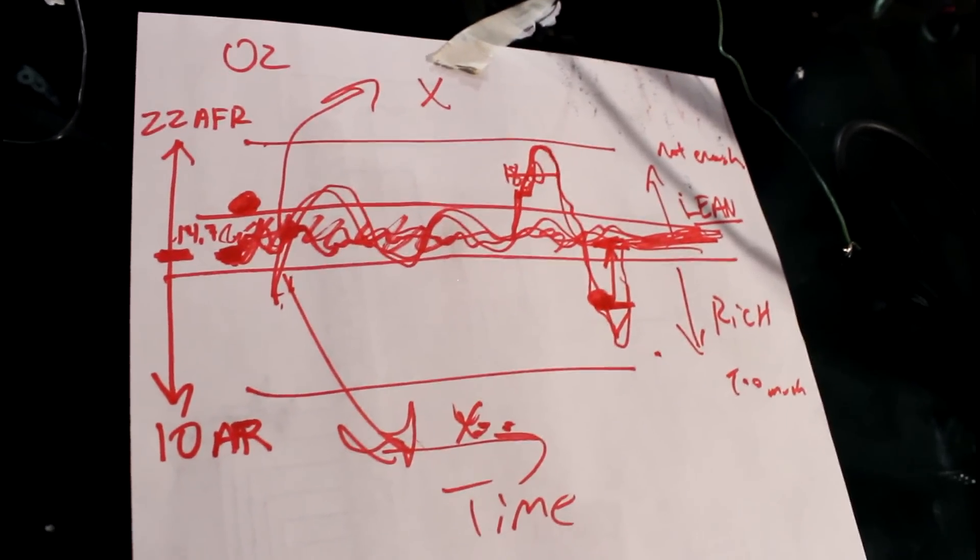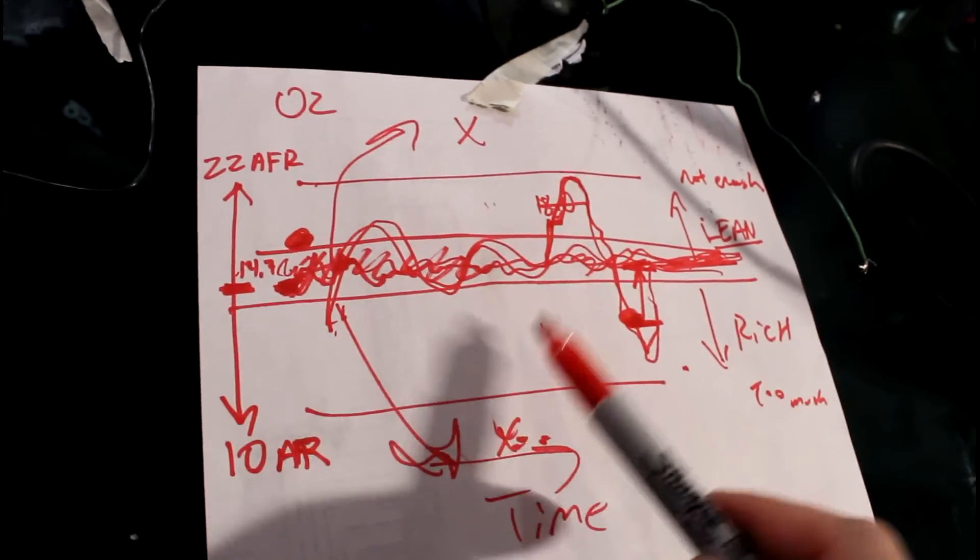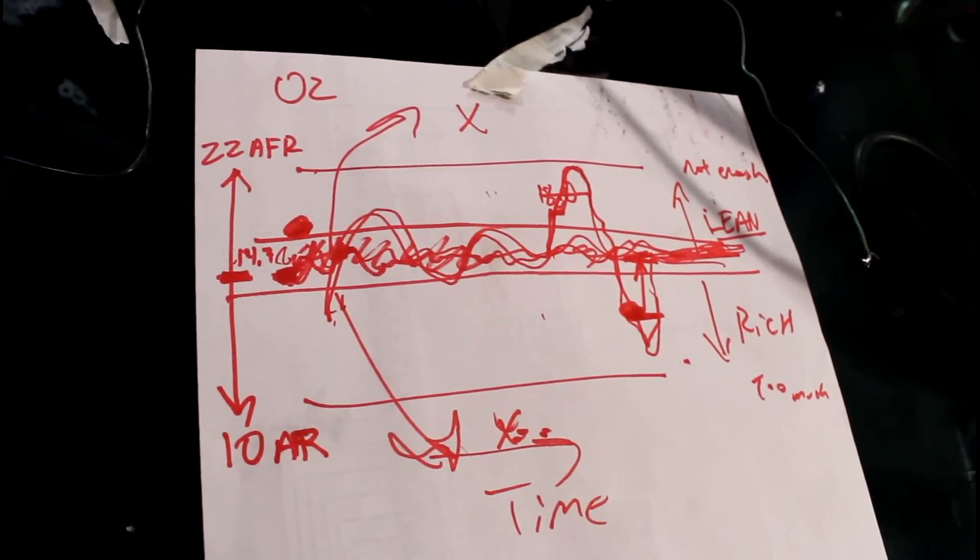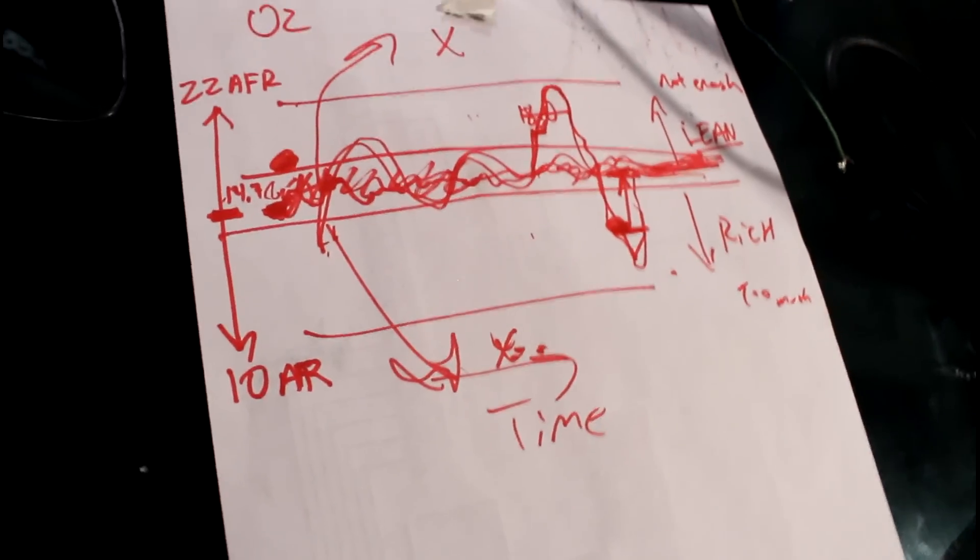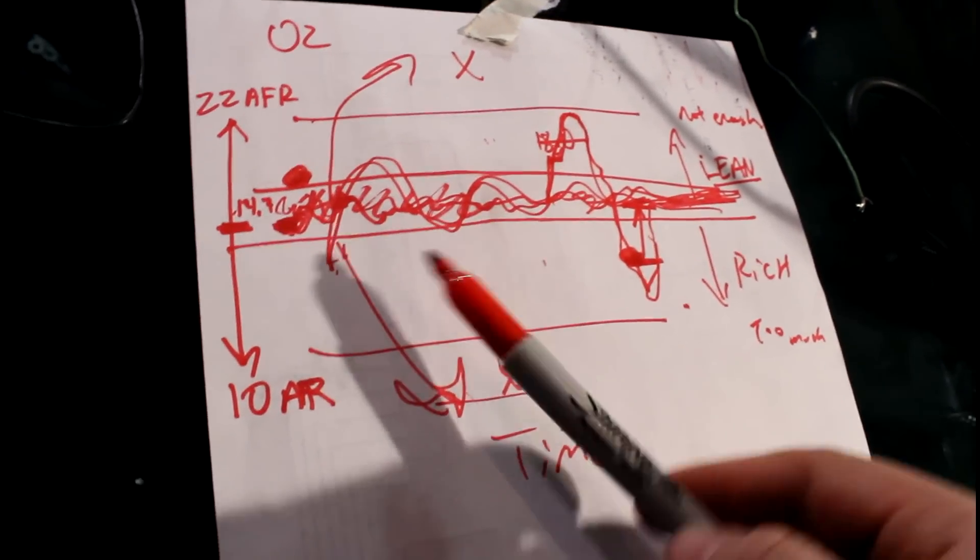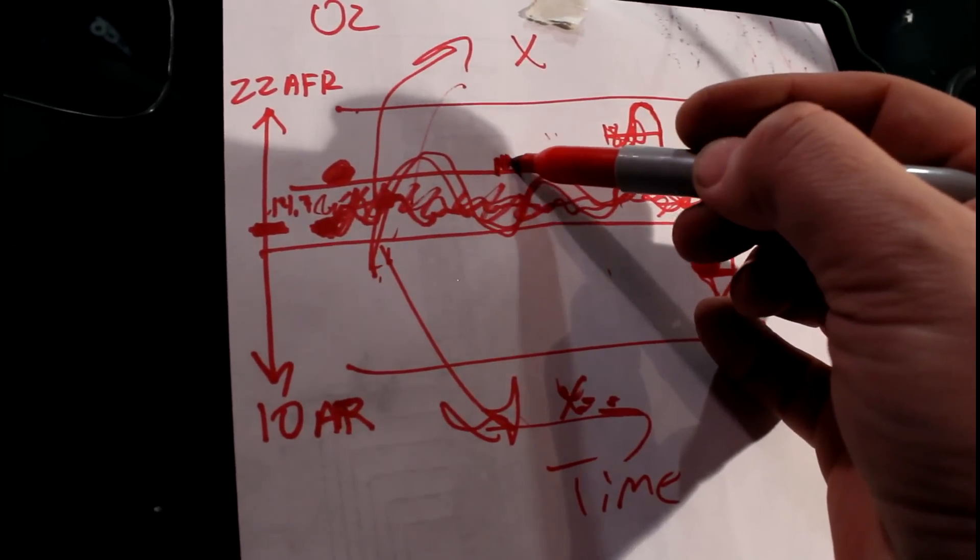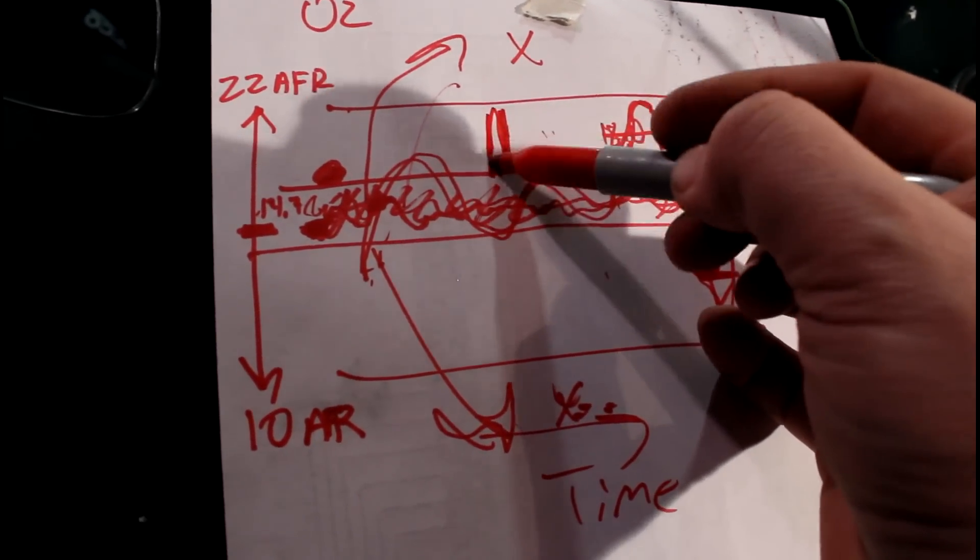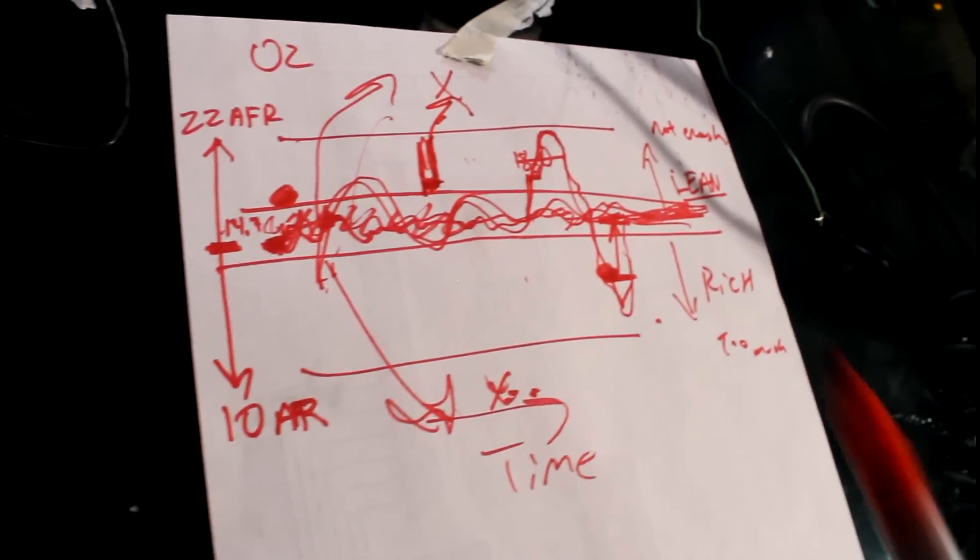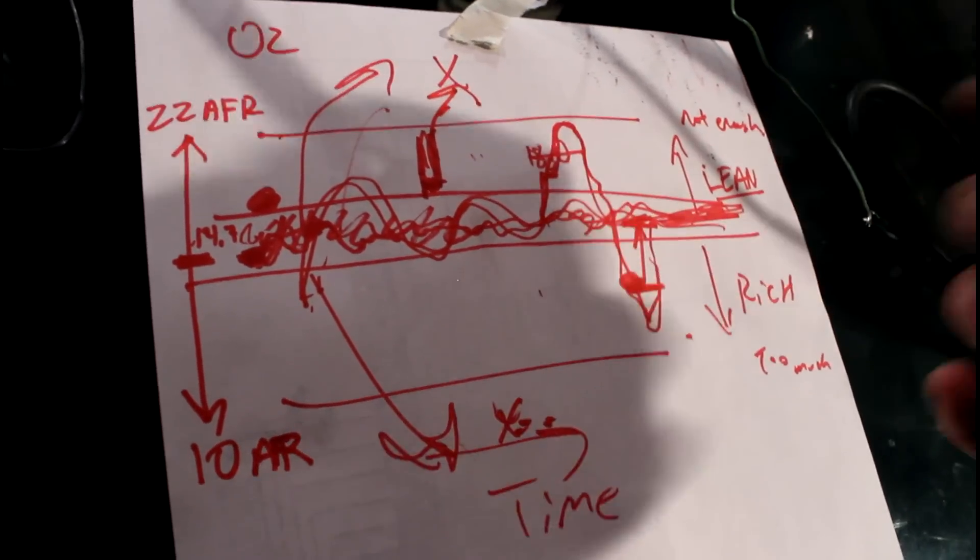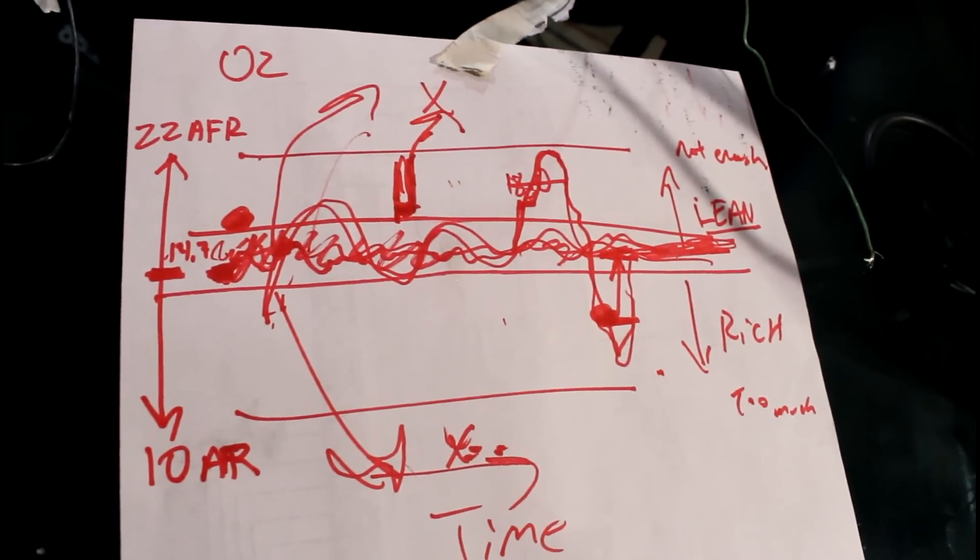So basically that's the difference between a narrowband and a wideband. A wideband is much better. It functions just as well as a narrowband. And I mentioned a simulated output for a lot of these widebands that will go to a factory ECU. Basically they simulate this voltage. If I'm in this area here, just go ahead and output the same as a factory unit would output. Kind of cheesy but it does what it needs to do for the factory ECU.